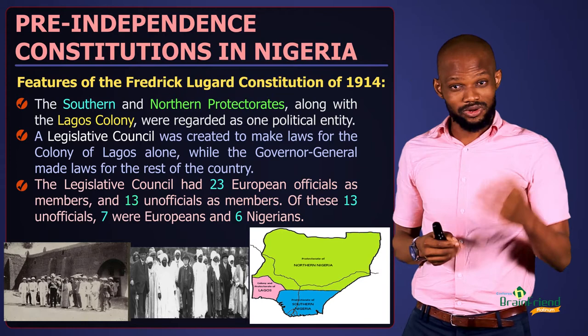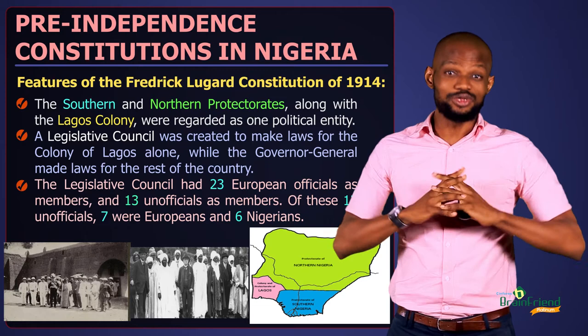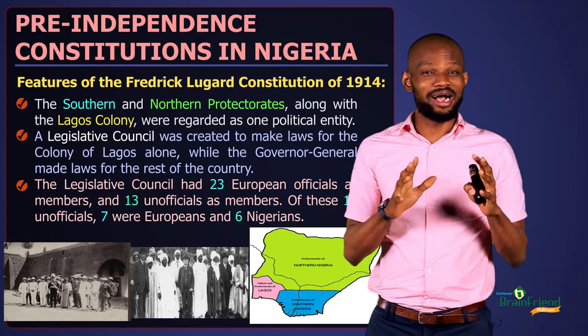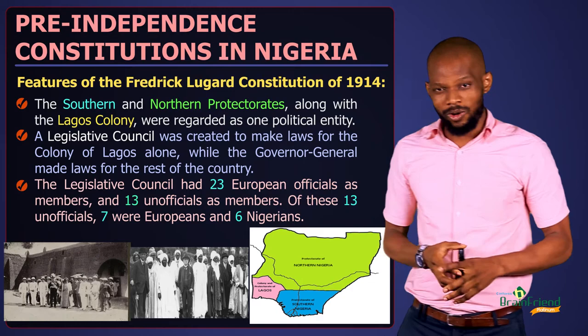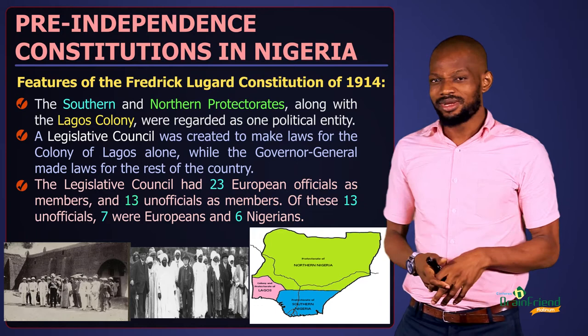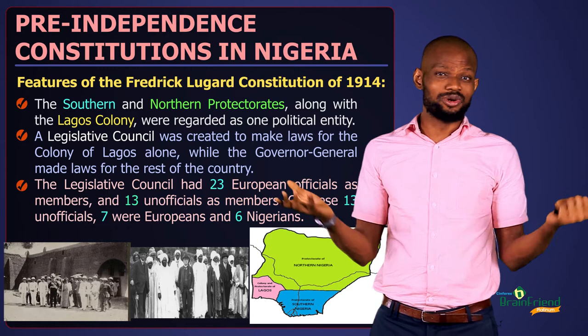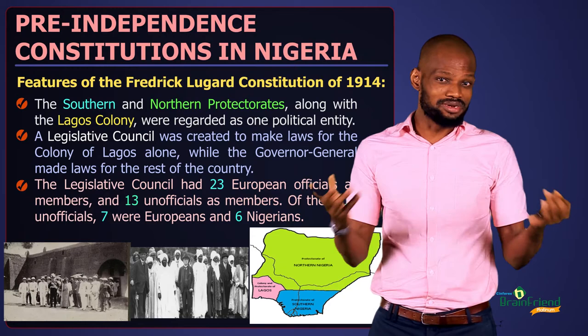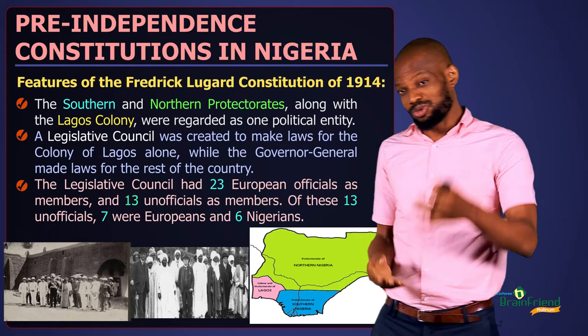Frederick Lugard formed this legislative council of 23 Europeans as official members to help administer affairs. These 23 official members were known as the official members who helped Frederick Lugard in the administration of the nation. There were also 13 unofficial members — seven Europeans and six Nigerians. The six Nigerians were likely just figureheads with no real input or contribution to the decision-making process, included merely so people wouldn't feel unrepresented.